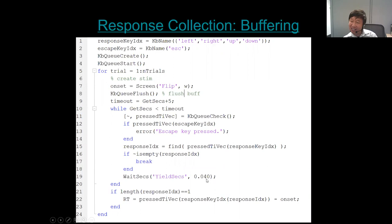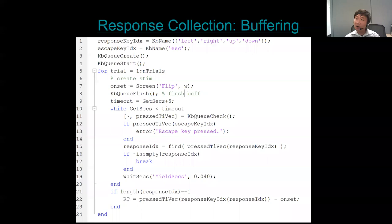Notice here the wait interval is 40 milliseconds — but that doesn't matter because the response is buffered. Even if you wait 100 milliseconds, you won't miss any response. That's why the polling interval is not critical when using the buffer. These examples look complicated, but I recently developed a simpler solution.